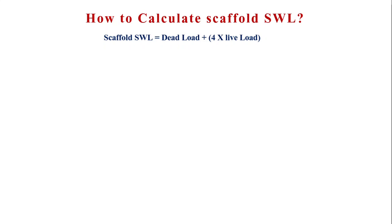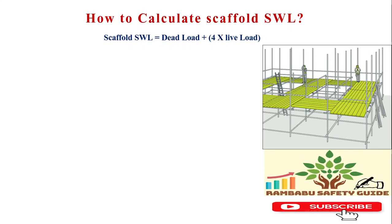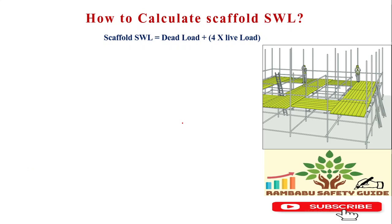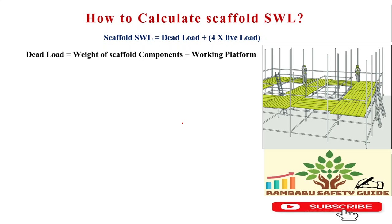The formula based on scaffolding is: Dead Load plus 4 times Live Load. You know dead load and live load, so now we have to calculate using this formula. For example, to calculate the dead load, the dead load means the weight of the scaffolding components and working platform.